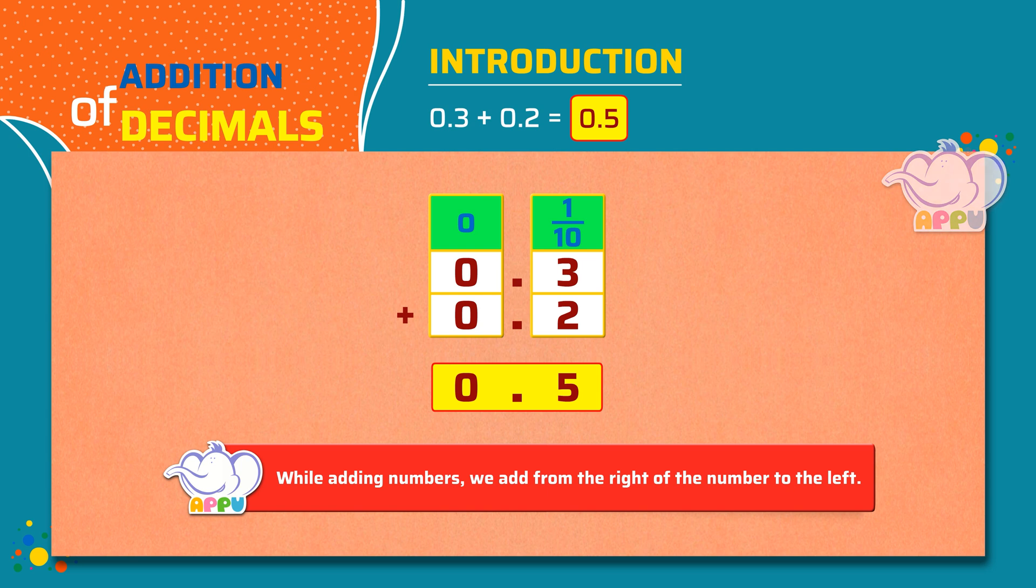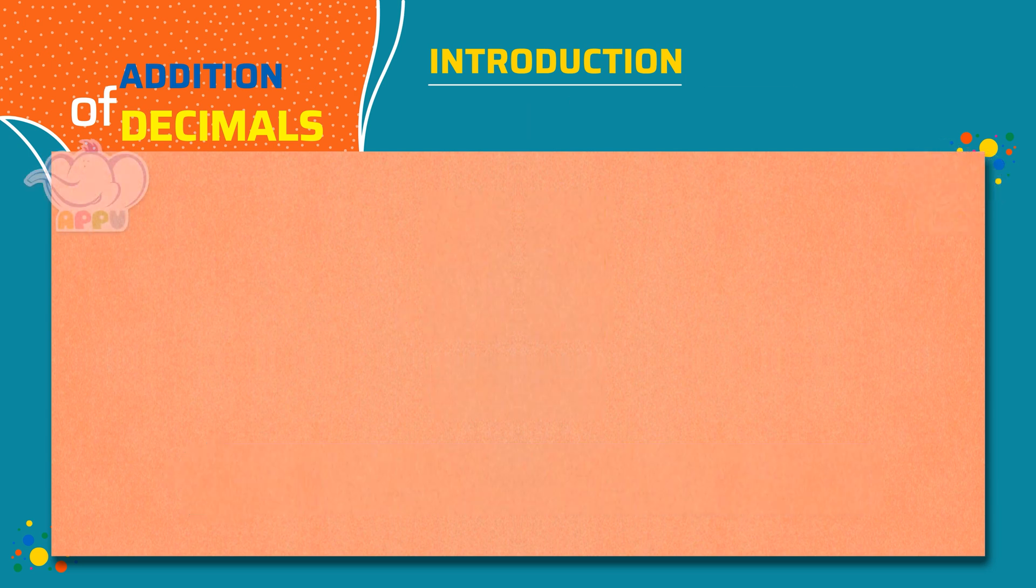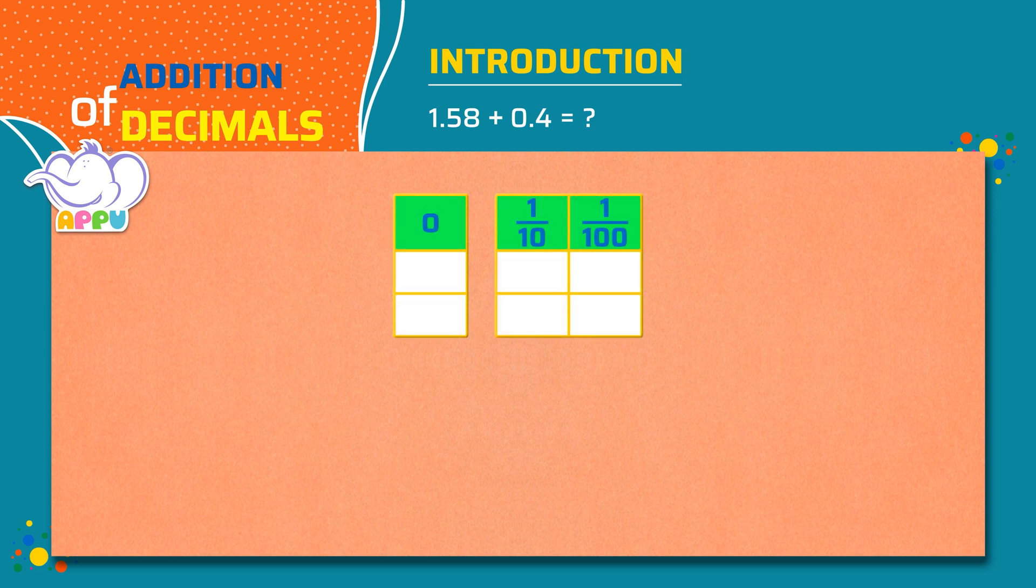Let's see another example. What is 1.58 plus 0.4? We write 1.58 in the place value chart as 1 ones, 5 tenths and 8 hundredths, and 0.4 as 0 ones and 4 tenths. Since we don't have any number in the hundredths place, we place a zero.